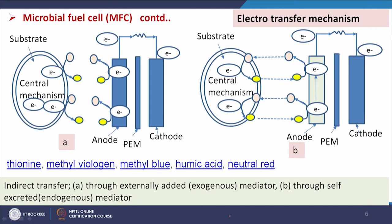There are basically two types of electron transfer mechanism in the anodic chamber. One is indirect transfer, where the electron generated by the cell working on the organic substance is carried from the bulk of the solution to the surface of the electrode — the anode — by some mediator. The mediator takes the electron from the cell due to degradation of organic compound, reaches the anode, releases the electron, becomes free, and returns to take more electrons.